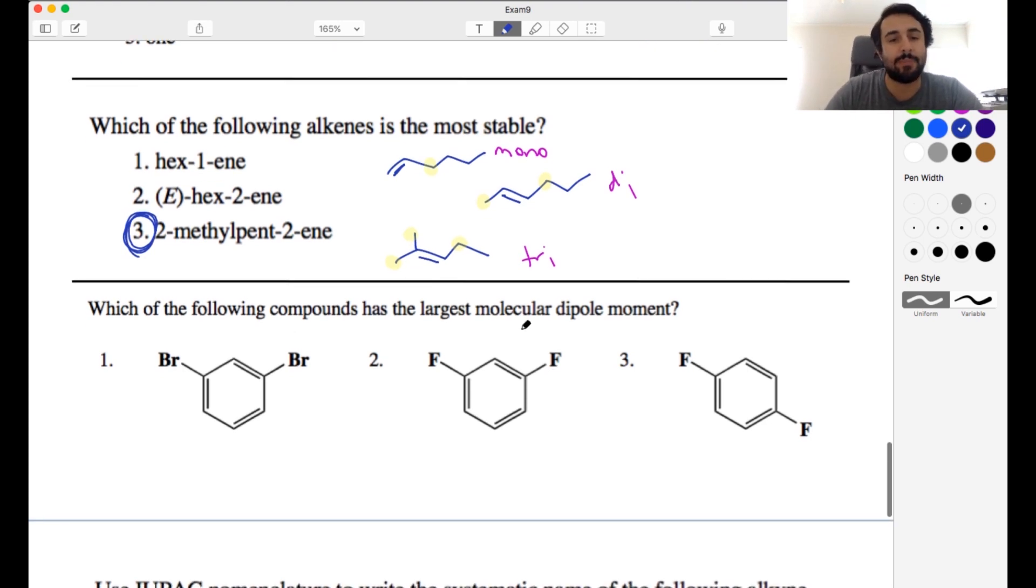Now, which of the following compounds has the largest molecular dipole moment? So let's identify any bond dipoles. So right here, carbon fluorine, carbon fluorine. Here also carbon fluorine, carbon fluorine, and carbon bromine, carbon bromine. So what do we understand here? Well, here we have two bond dipoles, but they are precisely opposing one another. So they do cancel each other out. So we have a net dipole of zero. This will be nonpolar overall.